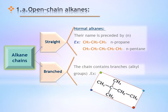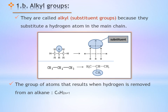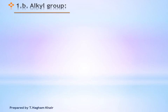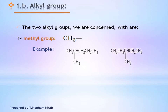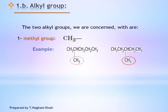The other type is branched chain. A branched chain contains an alkyl group. An alkyl group is a substituent added to the straight chain alkane — it is like an open-chain alkane with minus one hydrogen, so it has the general molecular formula CnH2n+1. In this unit, we are concerned with two kinds of alkyl groups: the methyl group, which is CH3, and the ethyl group, which is CH3CH2.